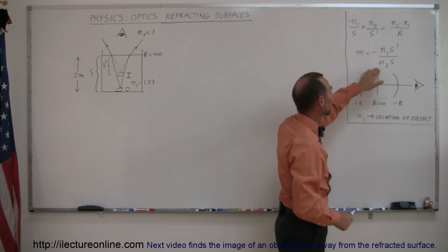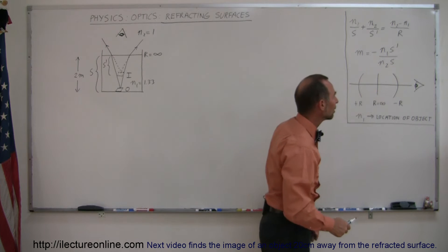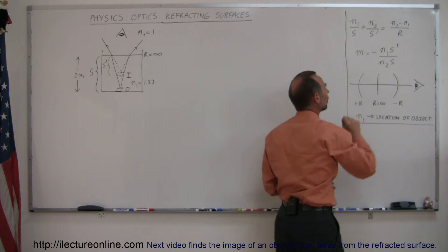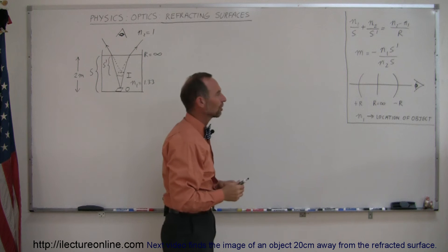S prime being the image distance, divided by N2 S being the object distance. Notice the location of N1 and N2, which may be different from what you would expect.